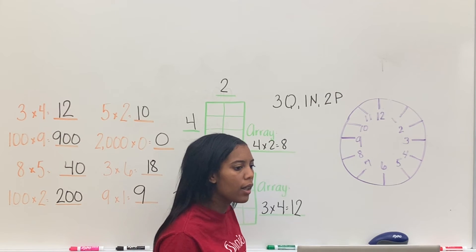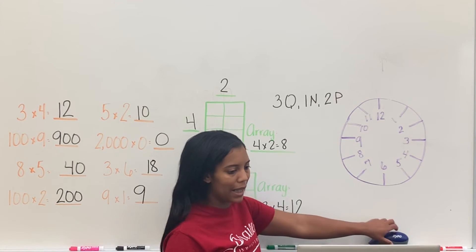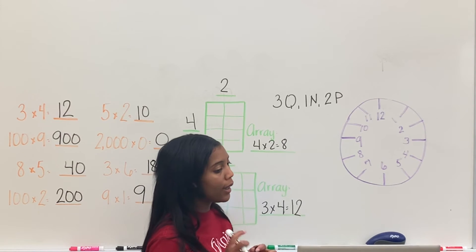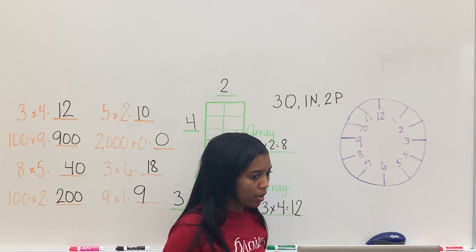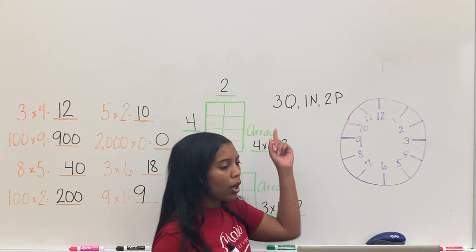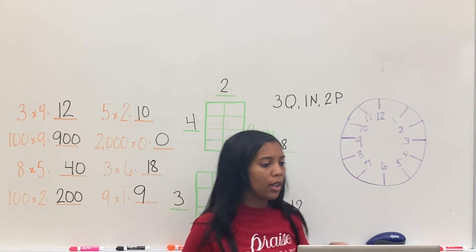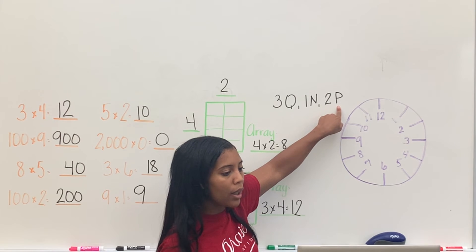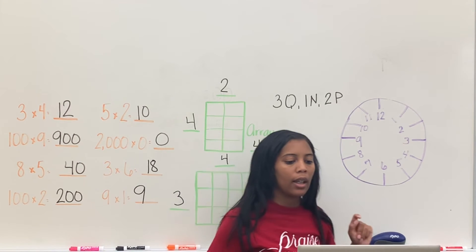Okay? 3 quarters, 1 nickel, and 2 pennies. Alright, so the answer is 82 cents. Okay? So your 3 quarters was 75. Then your 1 nickel was 80. And then 81, 82. 82 cents.